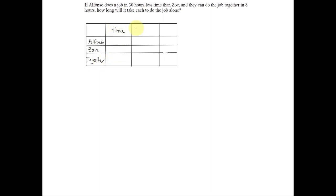Recall that with work rate problems, we can use a table where we have on the first column the person, so we'll say Alfonso, Zoe, and then together. The second column is the time it took each of them, and then the third column is the work rate.